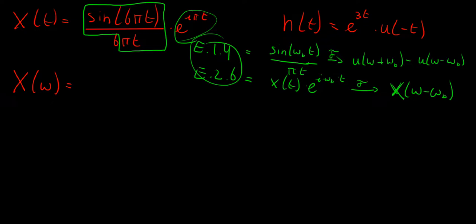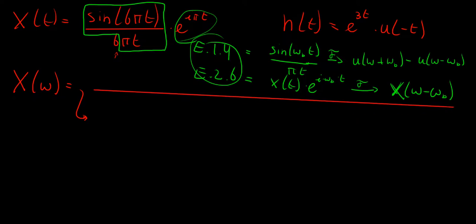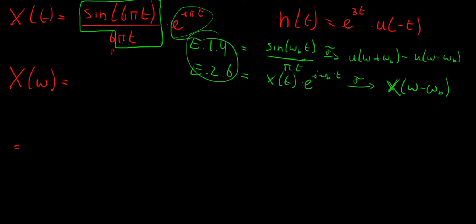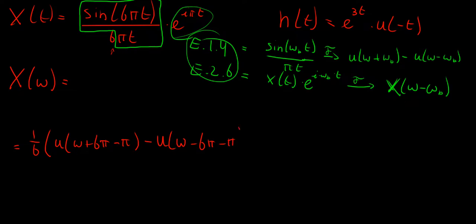Applying these rules, with the 1/6 factored out, we get X(ω) = one-sixth times: the step function of (ω + 6π) shifted by rule 2.6 — so (ω + 6π − π) = (ω + 5π) — minus the step function of (ω − 6π) shifted by π — so (ω − 6π − π) = (ω − 7π). Therefore X(ω) = (1/6)[u(ω + 5π) − u(ω − 7π)].